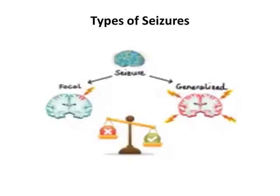Now let's switch gears and talk about the types of seizures. We basically have two types broadly speaking: focal seizures and generalized seizures. If the seizure is confined to any specific side of the brain and does not involve both sides of the cerebral hemispheres, then we call it a focal seizure — in this type the patient usually retains consciousness. On the other hand, if the seizure involves both sides of the cerebral hemispheres, then it is called a generalized seizure, and the patient usually loses consciousness.